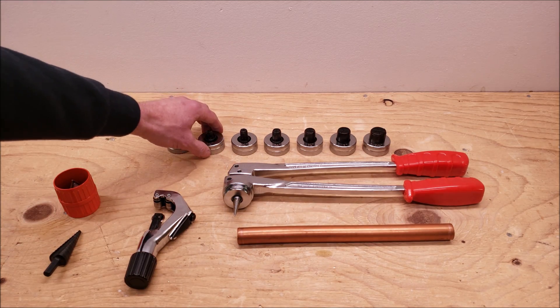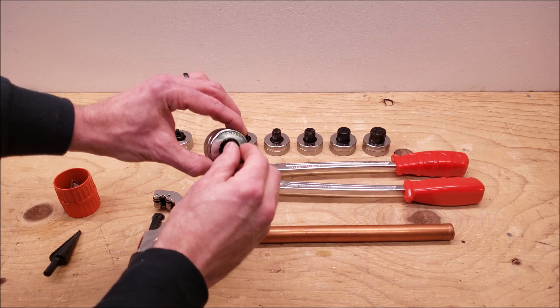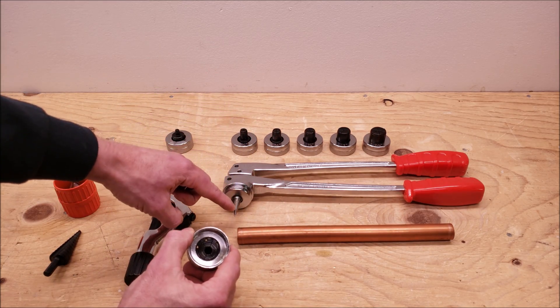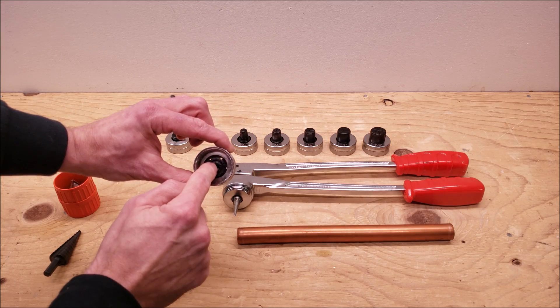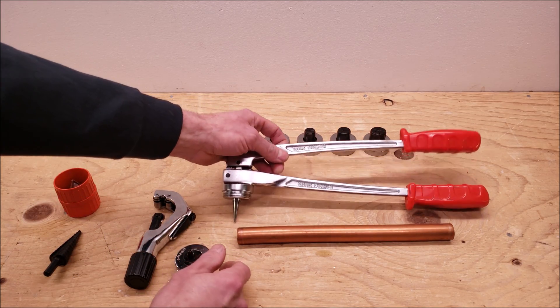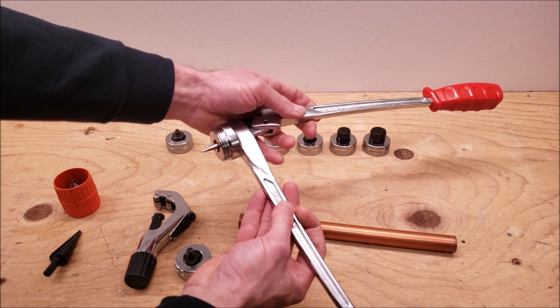Now we'll select our die. So this one's a 1/2". You see that this rotates right here and in the back this is where this little cone goes and it expands these in the front. So in order to do that you have to open this up all the way just like this.